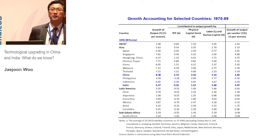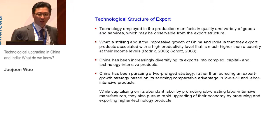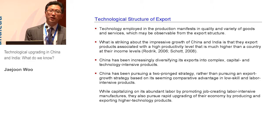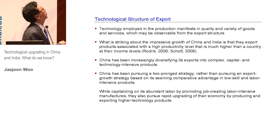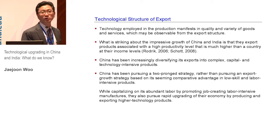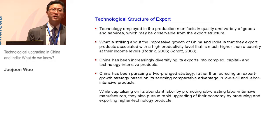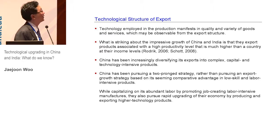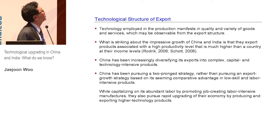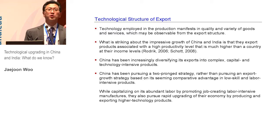Here's another way of looking at the technological component. The technology employed in the production process can also manifest itself in the variety or quality of goods, which we can observe from export structures. As Dani Rodrik and others observed, what's so special about China and India is that they tend to export much more highly sophisticated products than typical countries at their income level. Using UN trade data at the three-digit level, China especially has dramatically shifted into much more advanced product categories.